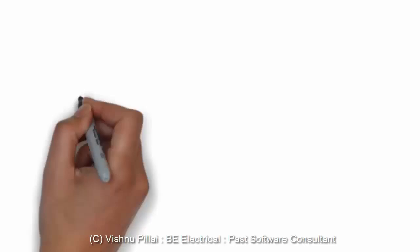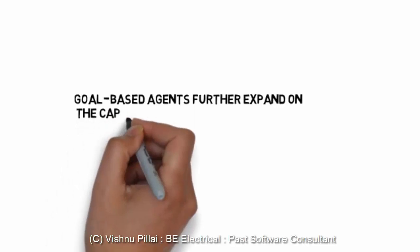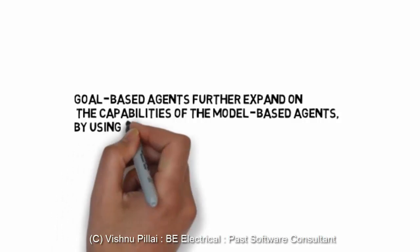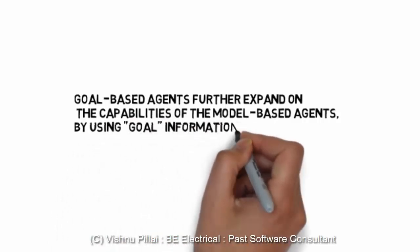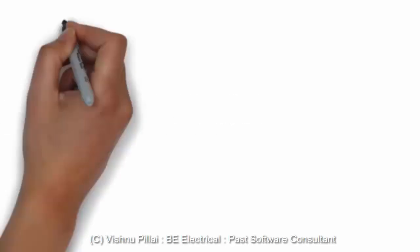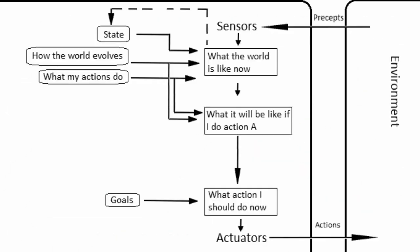This is lecture six in the series on learning about artificial intelligence, and it's about goal-based agents. We have looked into simple reflex agents and model-based reflex agents, and we are expanding further. The capabilities of model-based agents can be increased by adding goal information. The goal is the desired outcome state which we want an agent to achieve, and that information can be stored in the knowledge base or the algorithms of the agent.